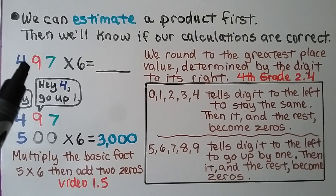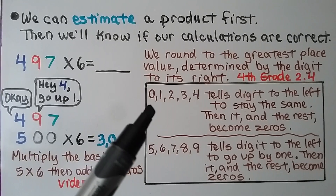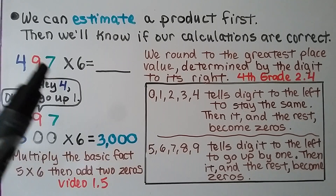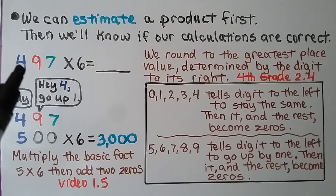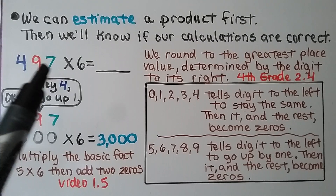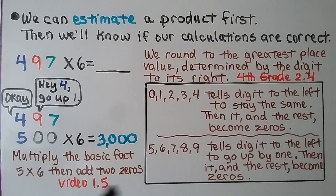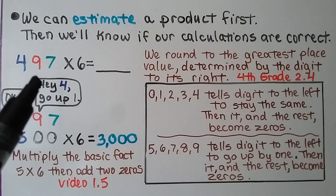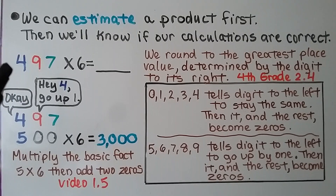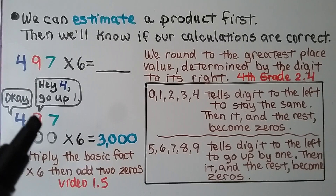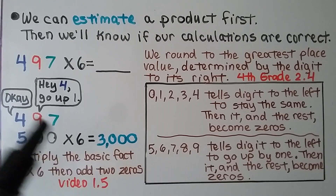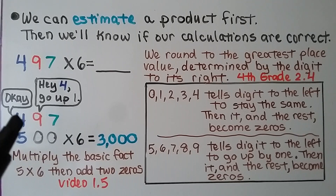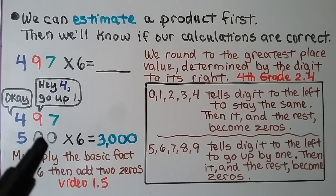The digit to its right is going to determine what it's going to do. So this nine is going to tell the four what to do. If the digit to the right is zero, one, two, three, or four, it tells the digit to the left to stay the same, and then it and the rest become zeros. If it's a five, six, seven, eight, or nine, it tells the digit to its left to go up by one, then it and the rest become zeros. So this nine tells the four to go up by one — four becomes five, and the nine and seven become zeros.